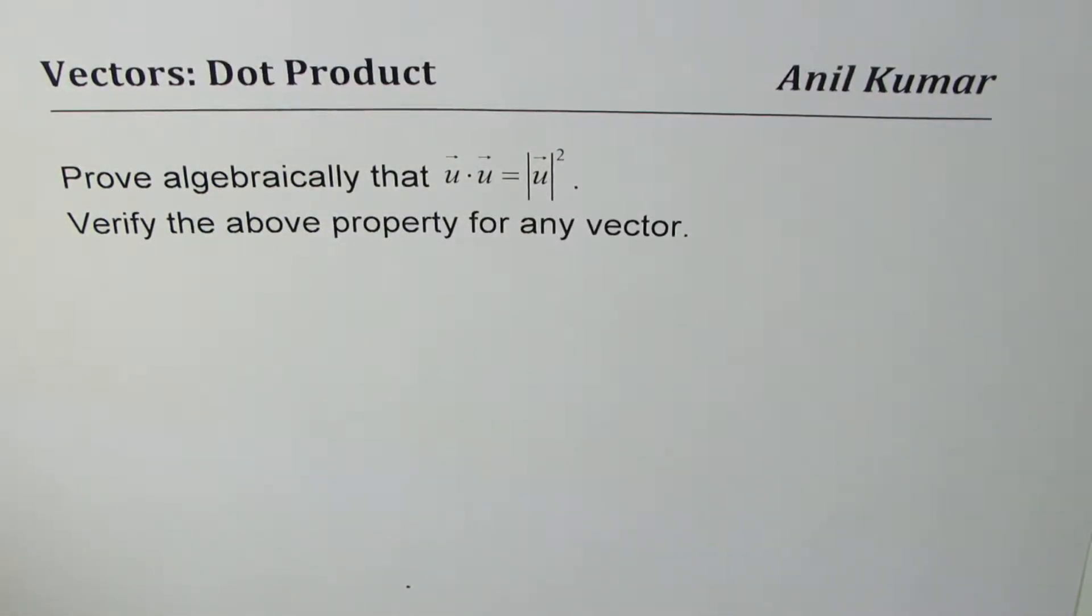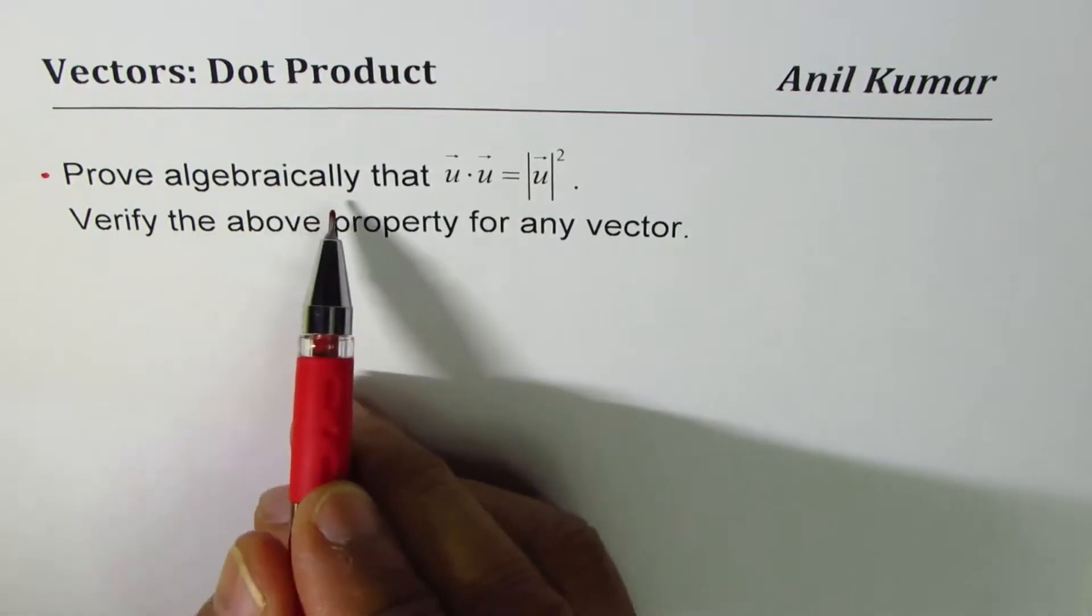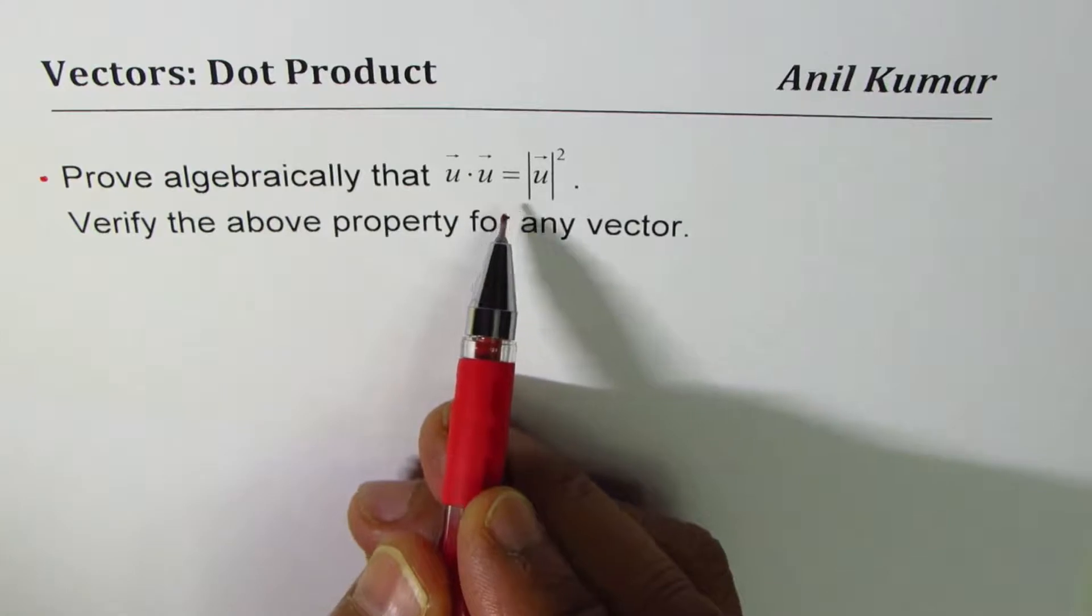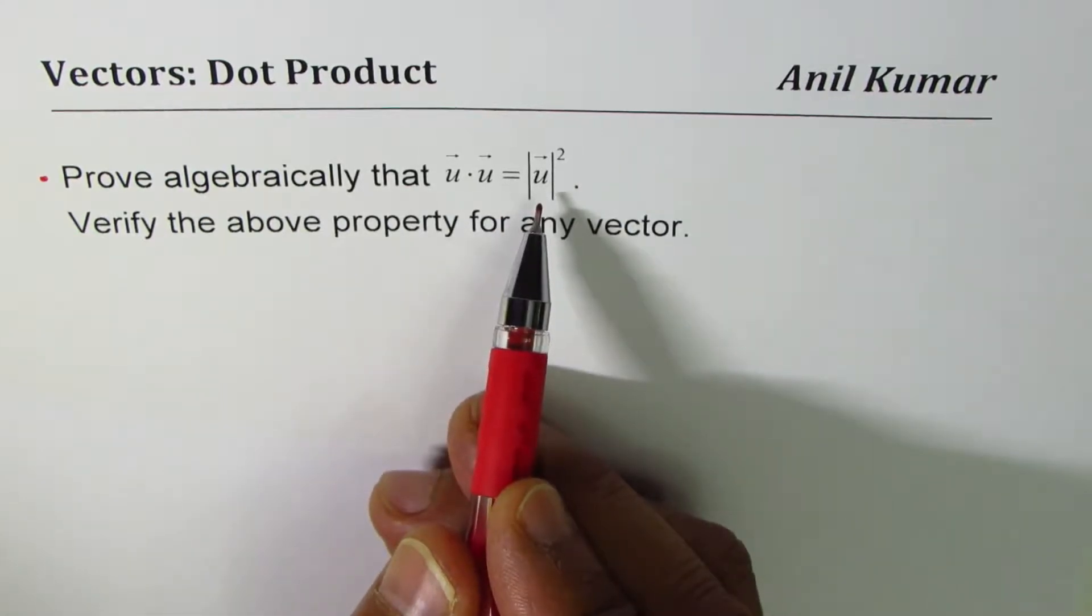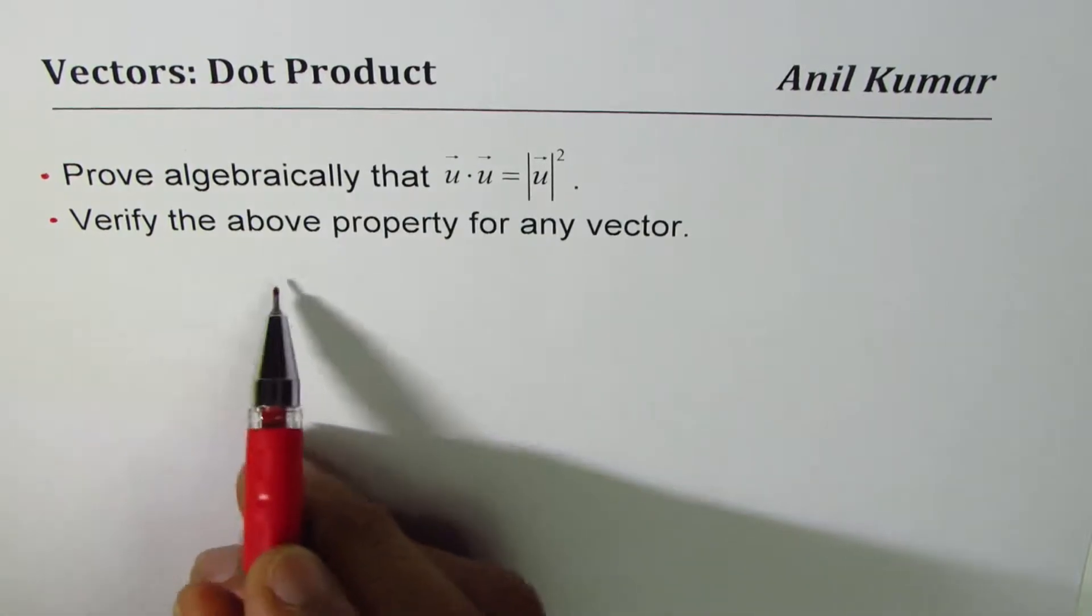I'm Anil Kumar sharing with you a basic property of dot products. The question here is prove algebraically that u dot u equals the square of the magnitude of u. And part B of this question is verify the above property for any vector.